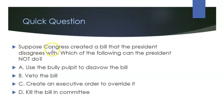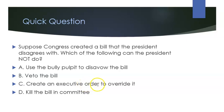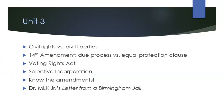Quick question: suppose Congress created a bill that the president disagrees with — which of the following can the president not do? If you said C and D, you were correct. An executive order is an informal power and you cannot override Congress with an executive order. You could certainly veto it, but you cannot override them.